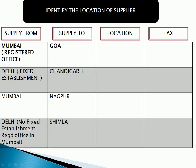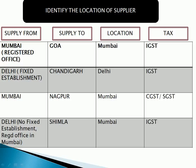The first answer: supply from Mumbai, the registered office to Goa — location will be Mumbai and tax will be IGST. Delhi fixed establishment is going to be used in Delhi, supply from Delhi to Chandigarh — location will be the location of the fixed establishment. Mumbai to Nagpur, Mumbai being the registered office, tax will be CGST in the same state. Delhi, no fixed establishment, registered office is in Mumbai, so location will be Delhi and tax will be IGST.